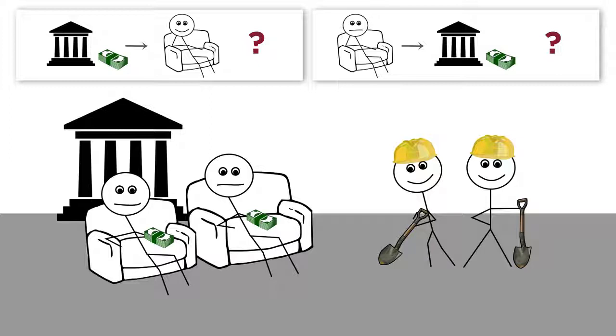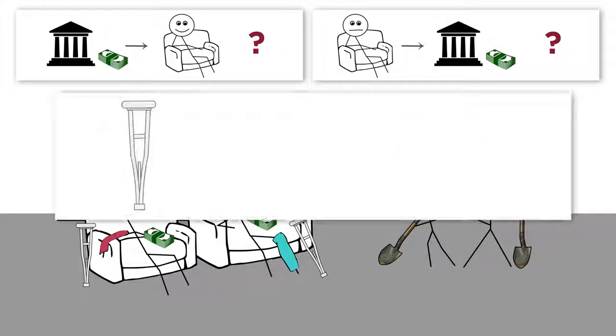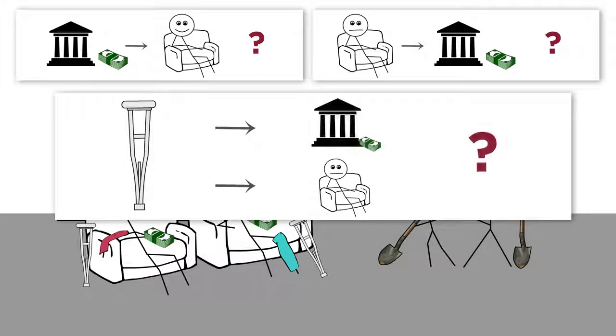Or maybe it means that some third factor, such as disability, is involved. People with a disability typically work less on average than people without a disability. And that disability may make people more likely to receive government benefits. The disability is responsible for both the reduced working hours and the government benefits.